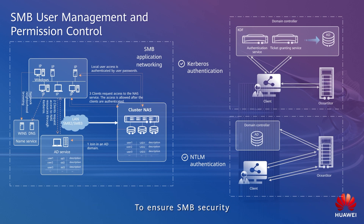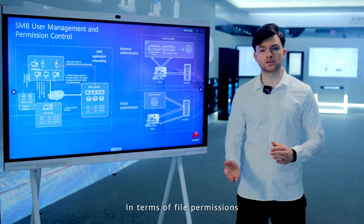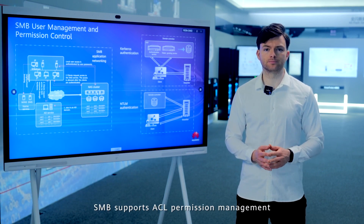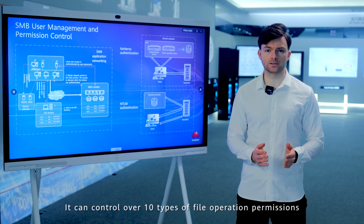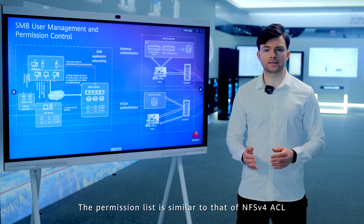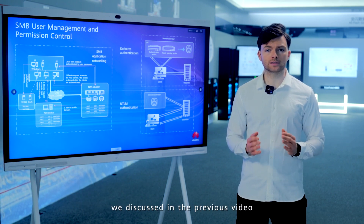To ensure SMB security, data can be signed or encrypted to improve the security level. SMB 3.0 has more secure signature and encryption algorithms than SMB 2.0. In terms of file permissions, SMB supports ACL permission management. It can control over 10 types of file operation permissions based on users and user groups. The permission list is similar to that of NFS v4 ACL discussed in the previous video.